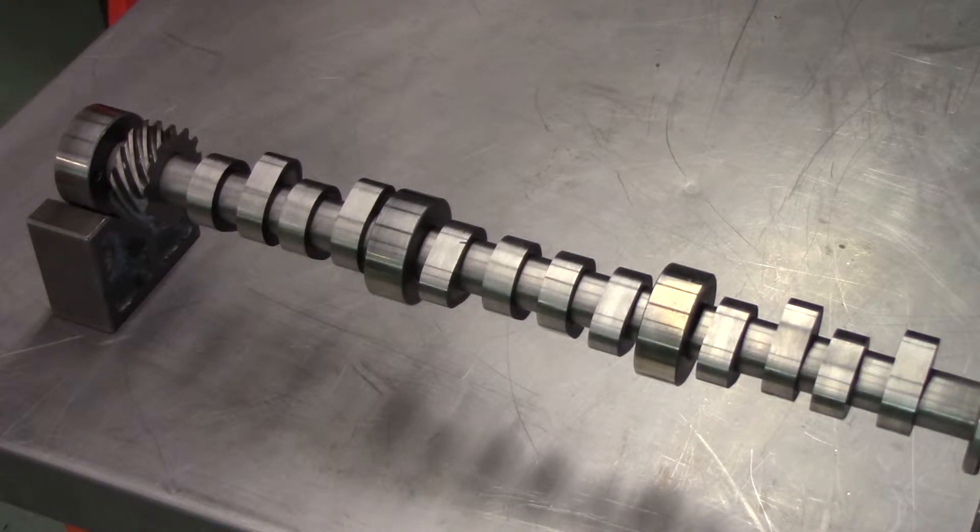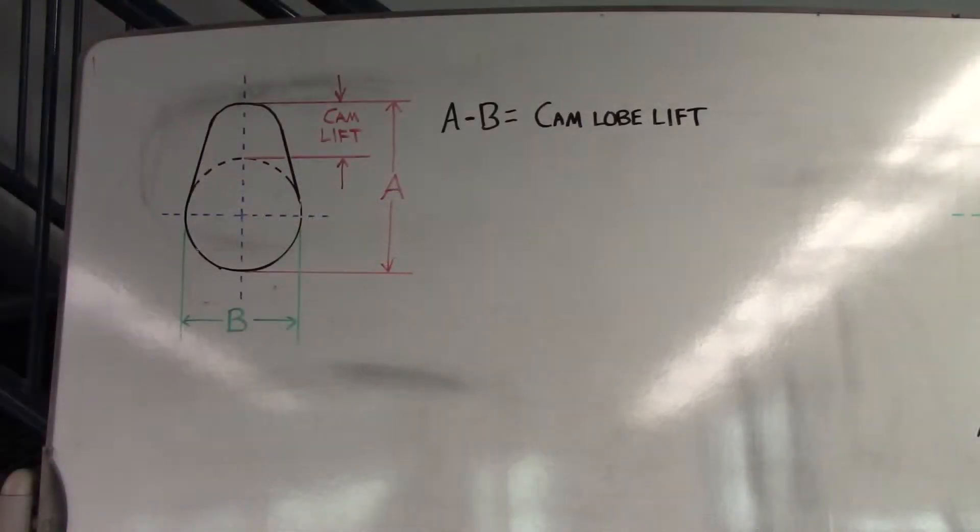Camshaft lobes must be inspected for wear or abrasive damage before any measurements are made. We will measure camshaft lobe lift in two different ways: the calculated method and the direct method. The calculated method requires us to measure the camshaft lobe in two places using an outside micrometer.